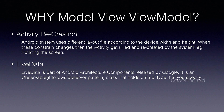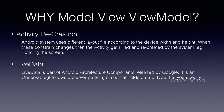LiveData is a final class which uses the observer pattern to provide an observer for a variable. Once the variable changes its value, the observer gets called automatically. Unlike other observer libraries, LiveData has lifecycle awareness, which means if your activity is not visible, the observer won't get called. When the activity becomes visible, it will send the latest data to the observer.